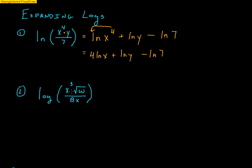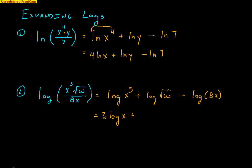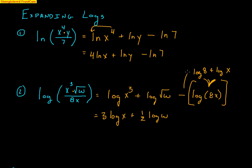Here's another, a bit more complicated: log of (x cubed times the square root of w, all divided by 8x). First, break apart division and multiplication: log of x cubed plus log of the square root of w minus log of 8x. The 3 comes down in front: 3 log x. The square root is a one-half power, so: plus one-half log w. For log of 8x, the multiplication breaks apart into addition: log 8 plus log x. But since there's a subtraction in front of the entire log, both become minus: minus log 8 minus log x.